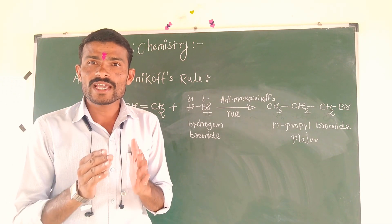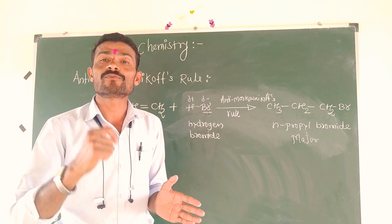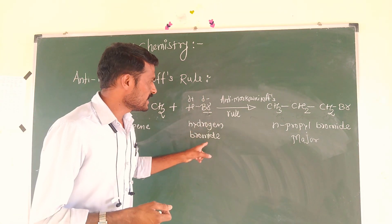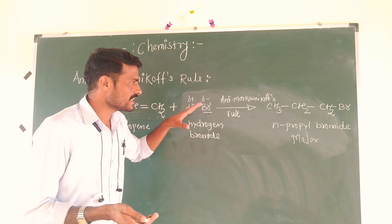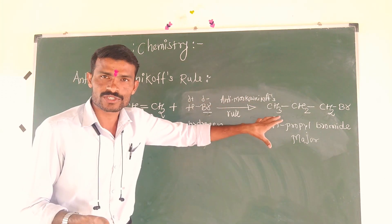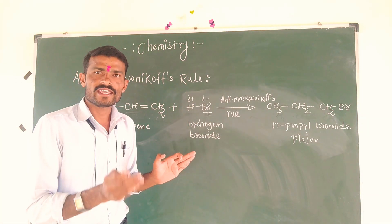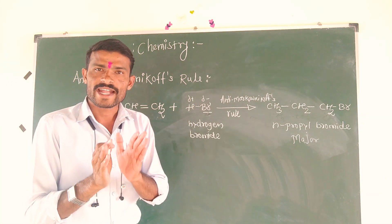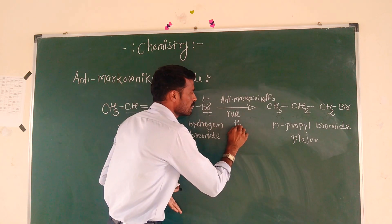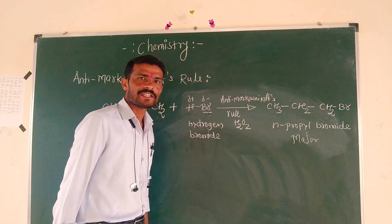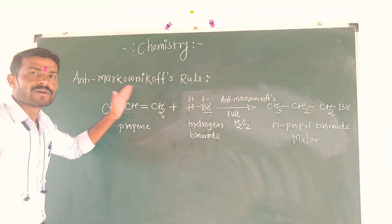According to the Anti-Markovnikov's Rule, the reagent always adds to the carbon with more hydrogen atoms. This occurs in the presence of a peroxide.